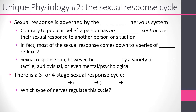The other unique physiology of the human sexual response is the sexual response cycle itself. Sexual response is governed by the autonomic nervous system, which means that contrary to popular belief, a person has no conscious control over their sexual response — to another person, a situation, or even algebra class. As many a teenage boy going through adolescence has learned, you can get an uncomfortable erection in the middle of algebra class and there's nothing you can do. In fact, most of the sexual response comes down to a series of spinal reflexes.